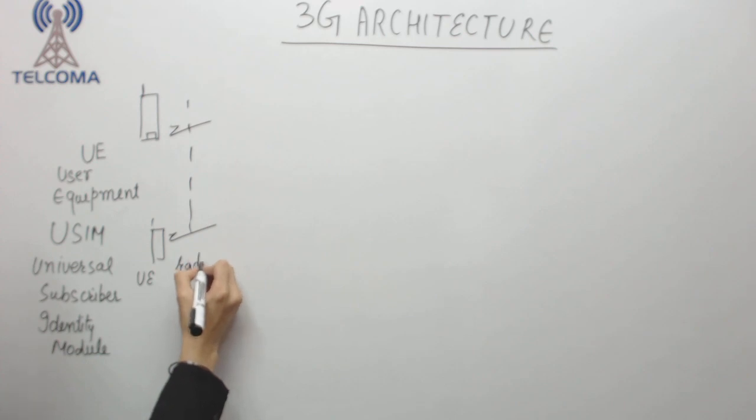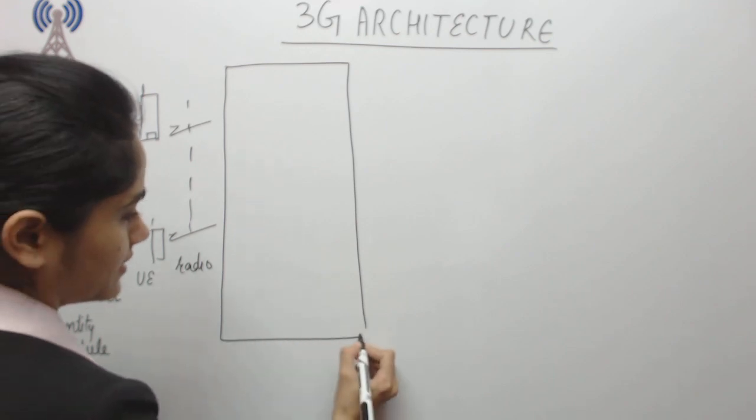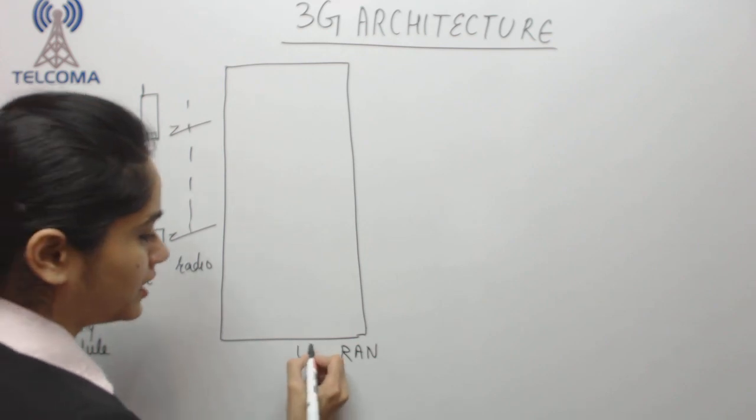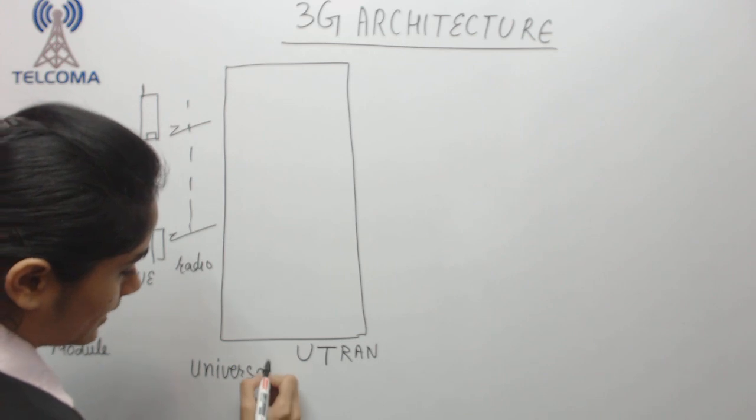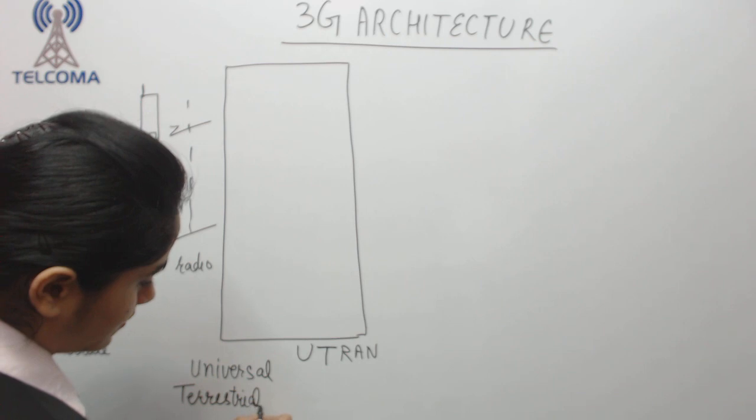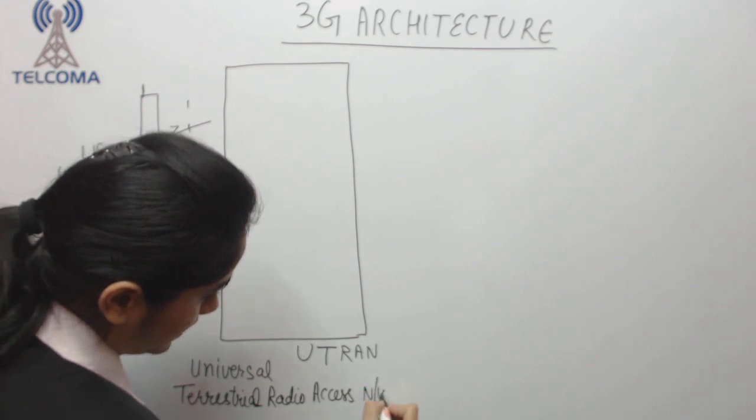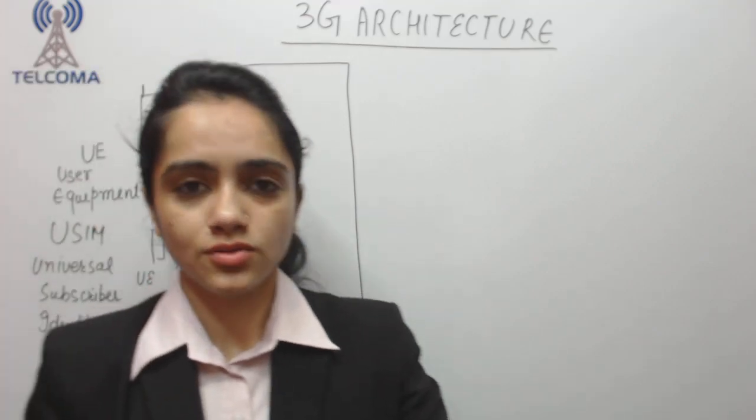RAN here we call as UTRAN, which is Universal Terrestrial Radio Access Network. Now we have BSS part in 2G. BSS is Base Station System. In this we have BTS and BSC, whereas in 3G we have Node B.